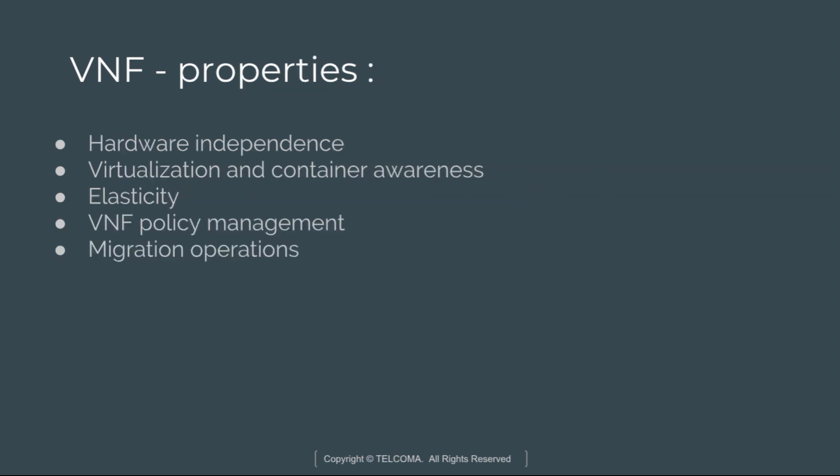The properties of a virtualized network function include: hardware independence, meaning it is COTS-ready and hardware dependence is not there; virtualization and container awareness, which covers hypervisor-dependent operating systems, containers, partial virtualization, and higher-layer container technologies; elasticity, which can range from no elasticity, to scaling up/down only, to scaling in/out only, or elasticity in either dimension. VNF policy management and migration options are also present.